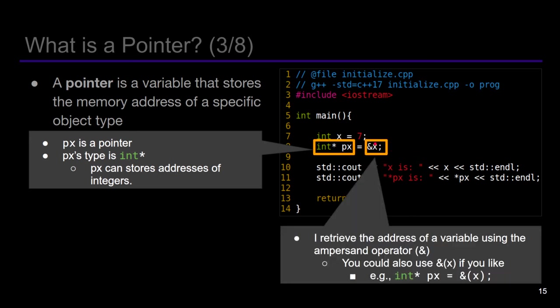The ampersand of x tells me I'm retrieving the address of x. You can rewrite this as ampersand with parentheses of x — the exact same line. You can think of the ampersand as a function call, an operator saying 'retrieve the address of x, please.' Why are we retrieving the address of x? Because a pointer is a variable that stores the memory address of a specific object type — in this case, a pointer to an integer. We can see that int x equals seven, and we're retrieving the address of some integer to point to.